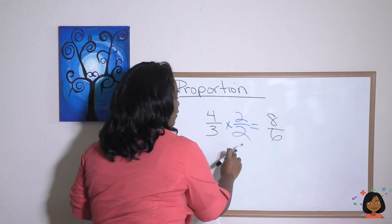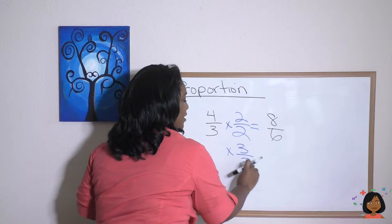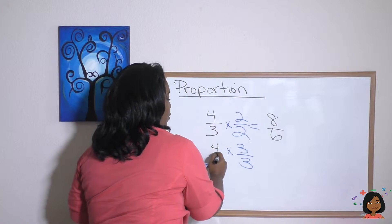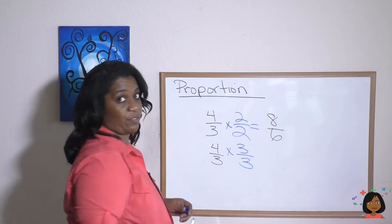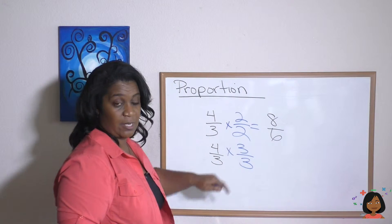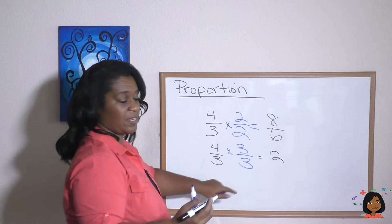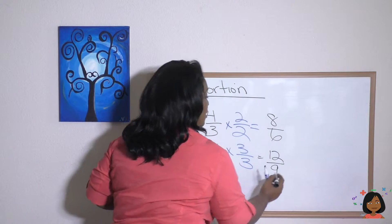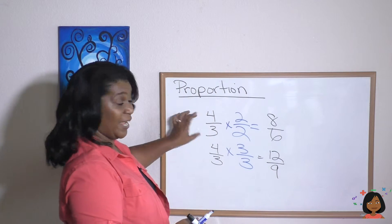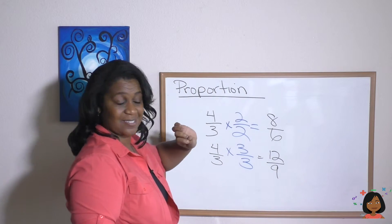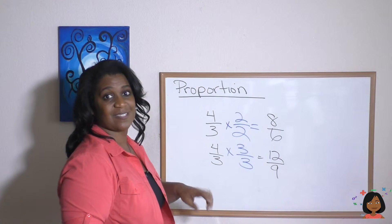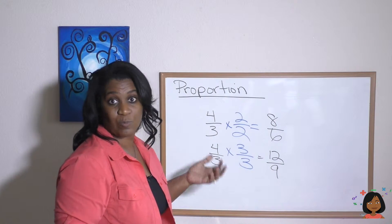Let's try it again. What if I wanted to multiply everything by 3s? So let's do 4 over 3 times 3 over 3. 4 times 3 is 12, 3 times 3 is 9. So guess what? 4 thirds, 8 sixths, and 12 ninths are all equal proportions.